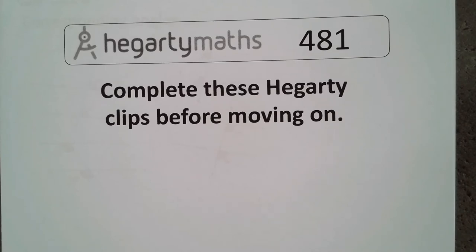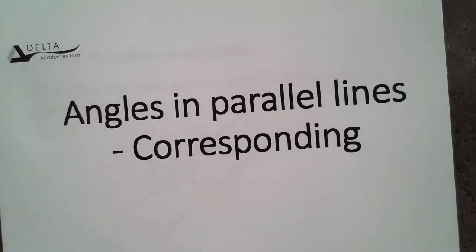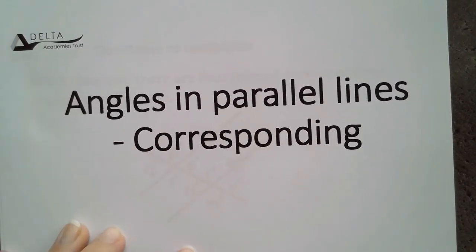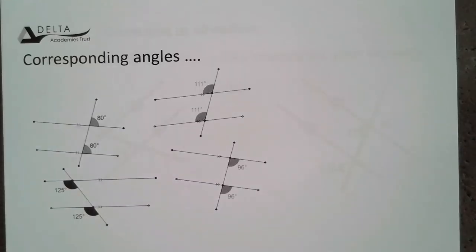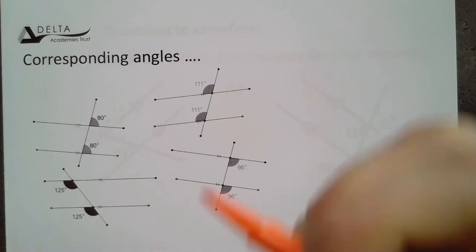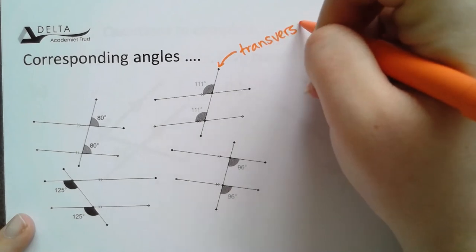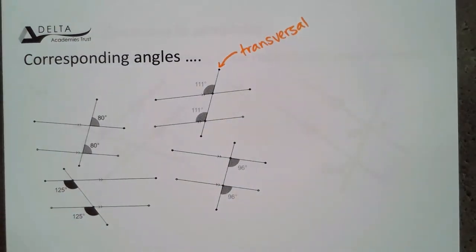The other angle type in parallel lines we're going to look at is corresponding angles. Again, remember that these angles are different to the alternate angles. Corresponding angles are different to the alternate angles in the sense that they're not on opposite sides of the transversal.